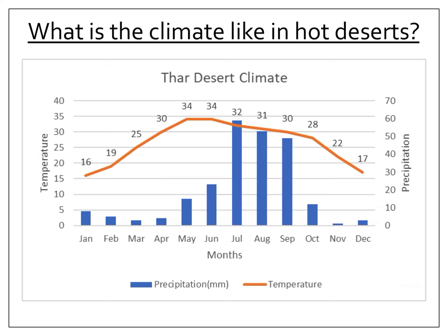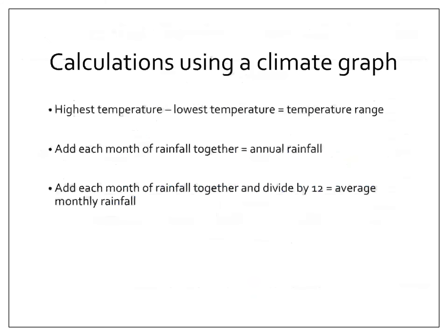The orange line shows temperature, and this graph is easy because it tells us the temperature above the line. I can see in May and June the temperature is 34 degrees, and in October the temperature is 28 degrees. In an exam, those numbers might not be shown on the line, so you would need to look at the orange line and read the left-hand axis where it says temperature to find out how hot it is in the desert.